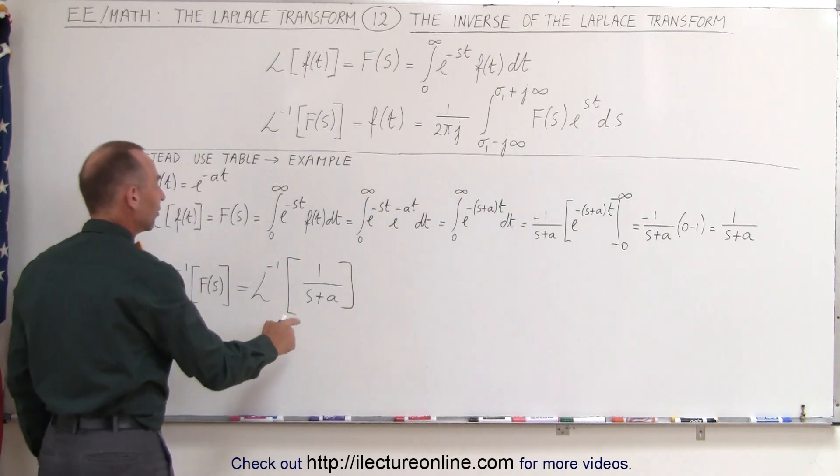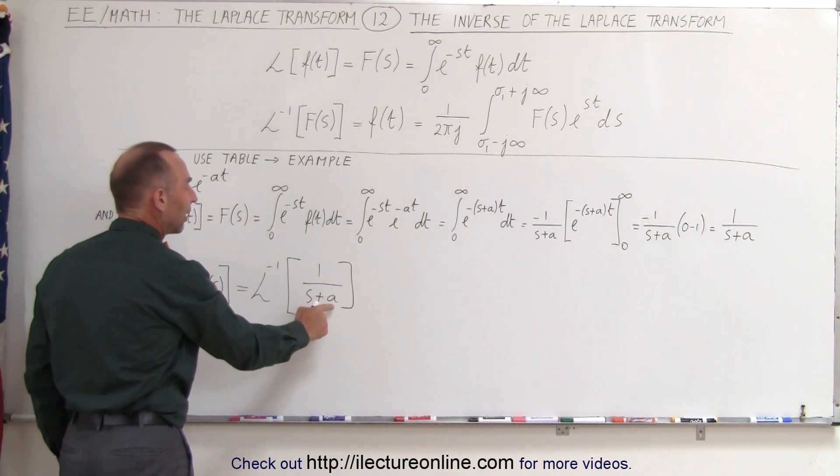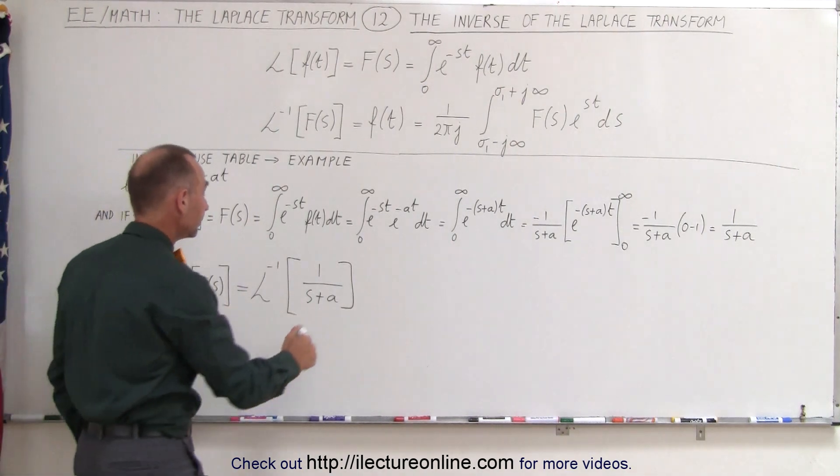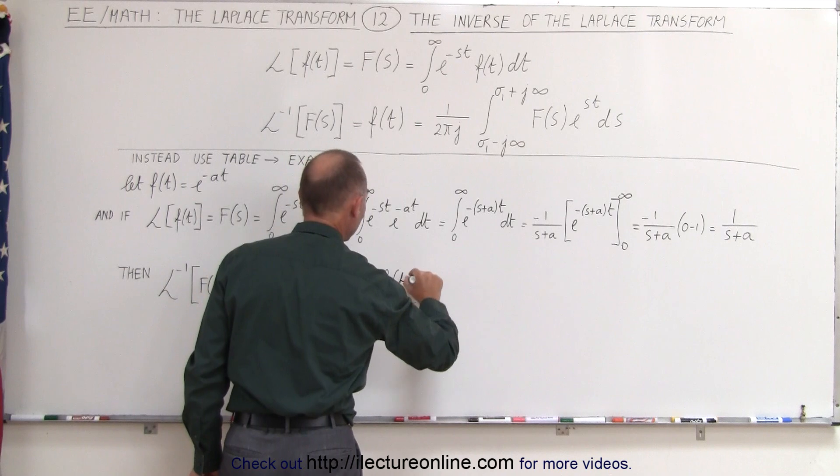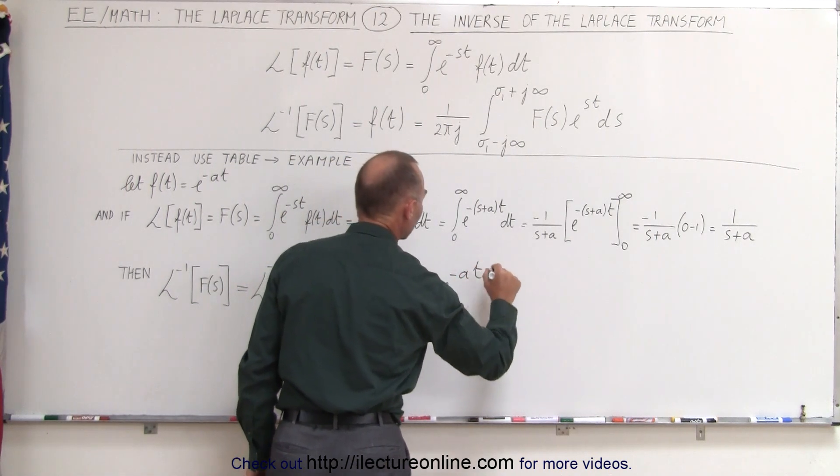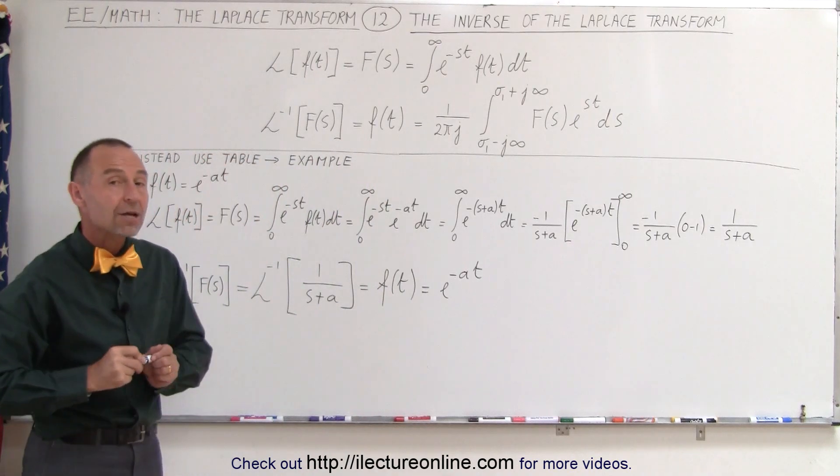And assuming that since one over s plus a is the Laplace transform of the original function, we should be able to go backwards. And so this is then equal to the function in the time domain, which is then equal to e to the minus a times t.